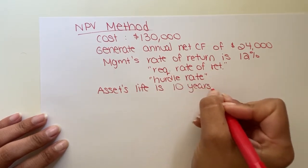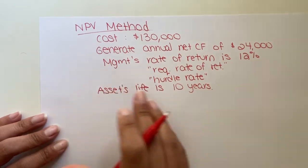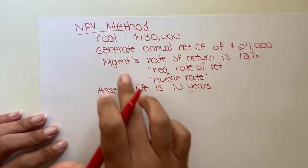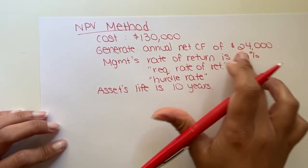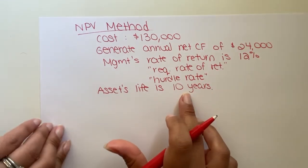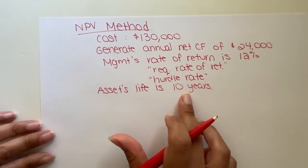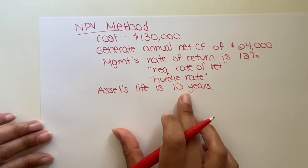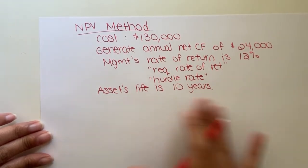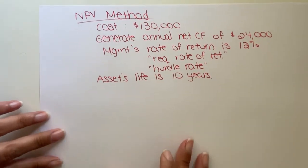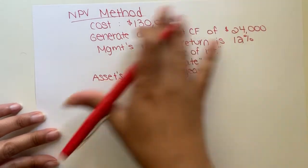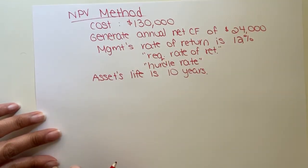We are going to assume, even if it doesn't say, that this asset will generate these annual cash flows for every year of its life. So unless it says the asset will only generate cash flows for the first five years, if it doesn't say that, you assume it generates that every year of its life. This is data similar to what you'd be given in a homework or quiz problem.